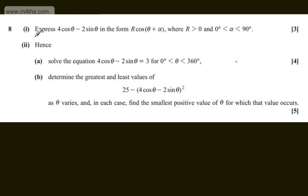This is question number 8. In the first part, we're asked to express 4cosθ minus 2sinθ in the form r·cos(θ + α), where r is greater than 0 and α is between 0 and 90 degrees.